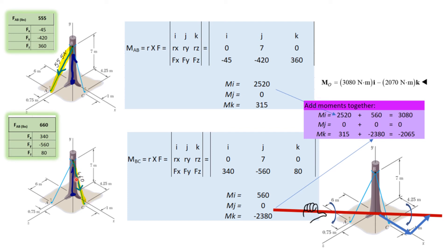For cable BC, think about which way it's trying to rotate: it's pulling in the x-direction, which means it rotates the tree around the z-axis, so you'd expect the large component in the k-direction. The position vector is again down the tree trunk: [0, 7, 0]. We already split 660 newtons into xyz components. Crank through the cross product to find the i, j, and k components.